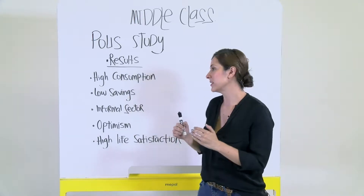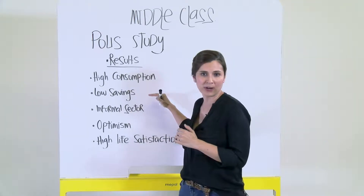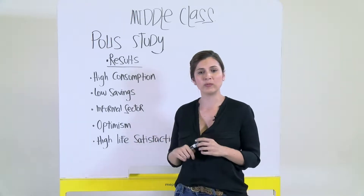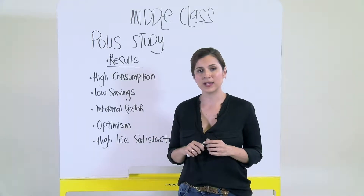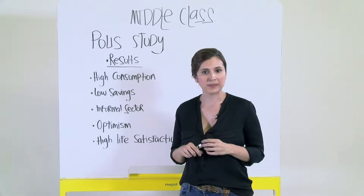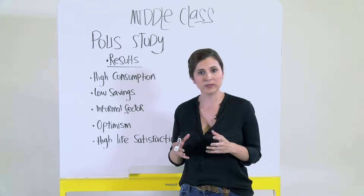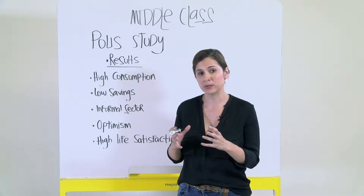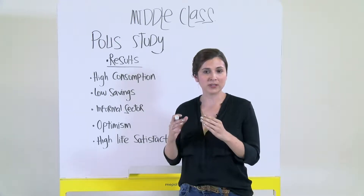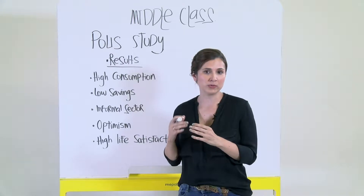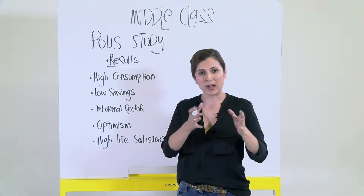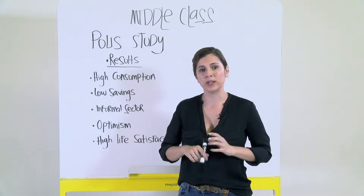This high consumption is also translated into low savings rates. Less than 40% of the people who responded to the interview declared that they have at least three months of savings in case of unemployment. This is one of the characteristics of the vulnerable middle class, because in case of an external cash shock, they would not be able to live up to their standards and might fall back to a lower income bracket.